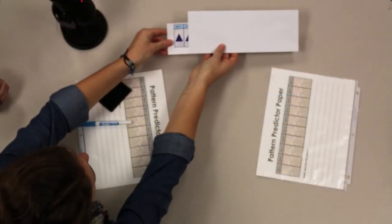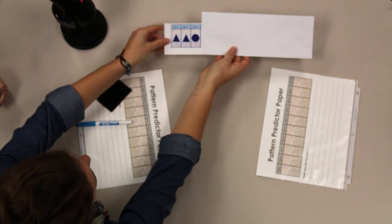To start the game, place a pattern strip in the pattern sleeve. When all pairs are ready, reveal the first three figures of the pattern.